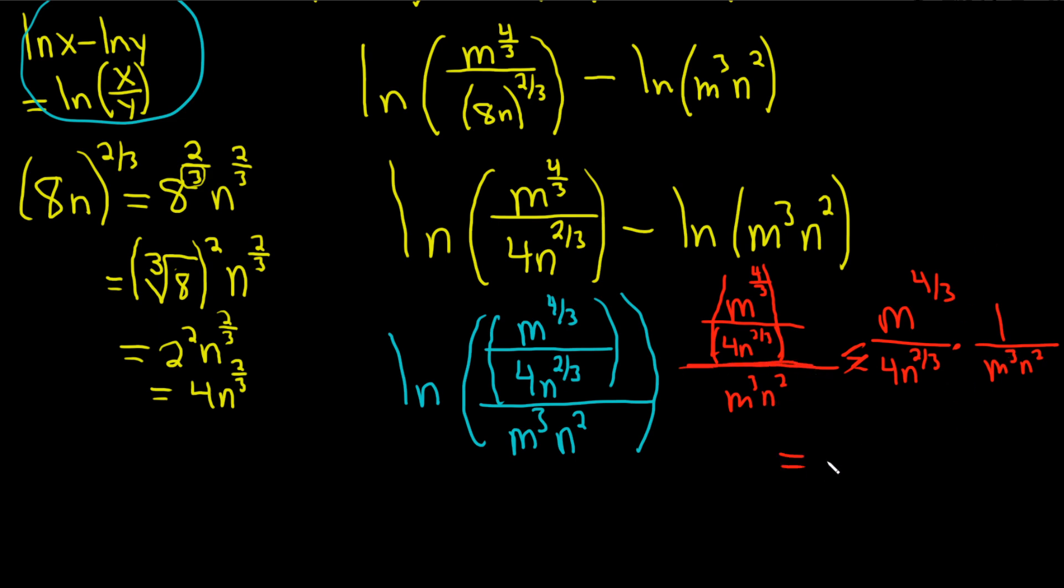So this is going to be equal to m to the four-thirds over, on the bottom, we'll have 4m cubed. I wrote the m first. What about these ns? Here we have n to the two-thirds times n squared.